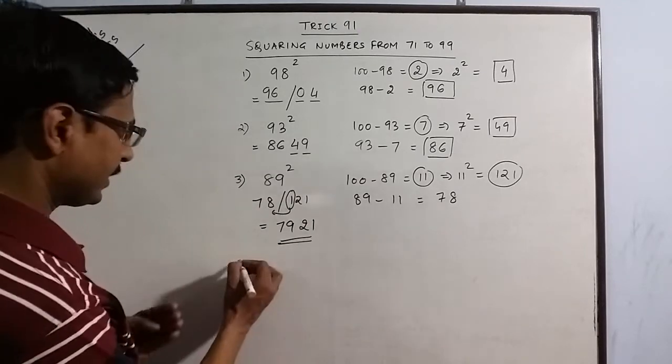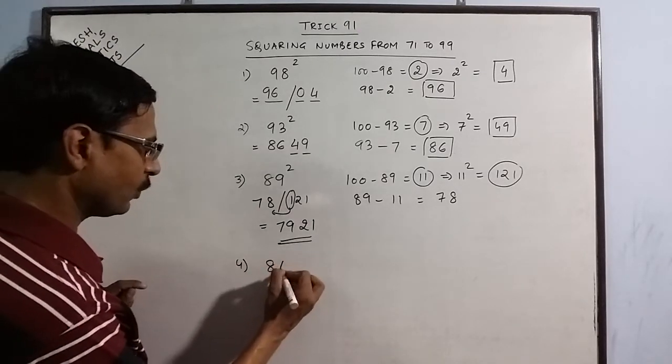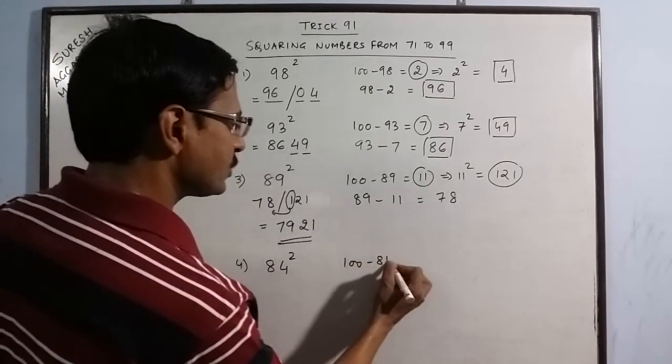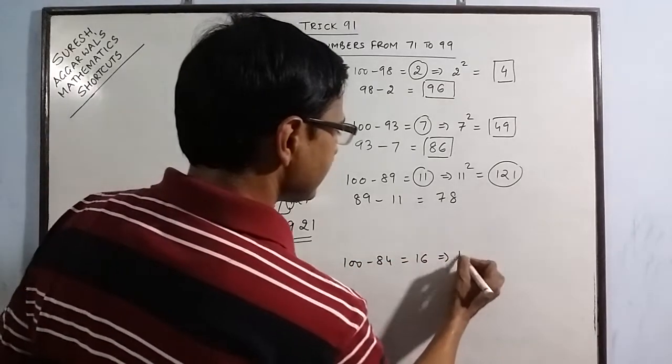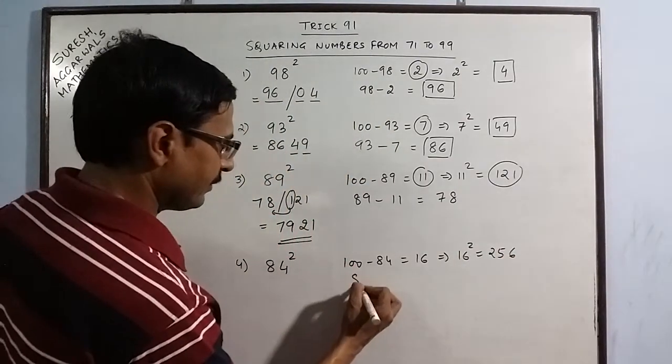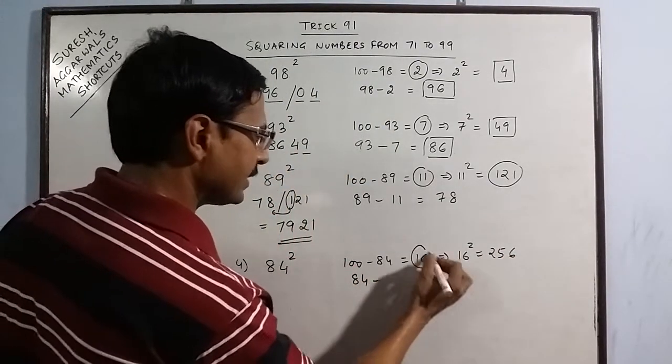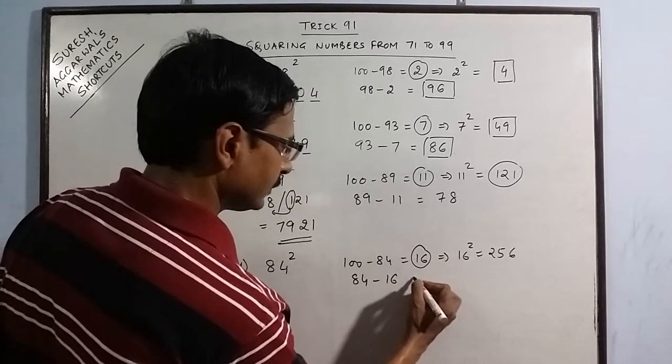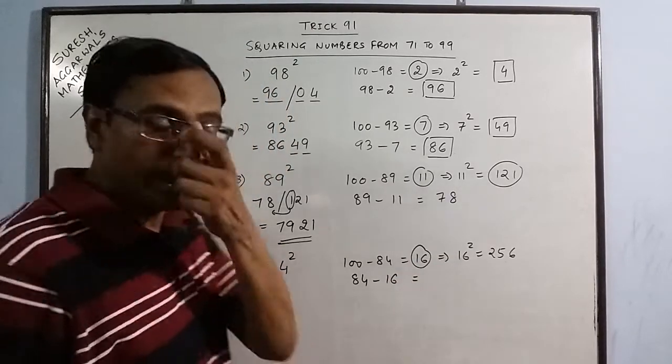Let us go further. Say we have 84 square. So 100 minus 84 gives you 16 and 16 square gives you 256. And when you subtract 84 and this number, you get 68.